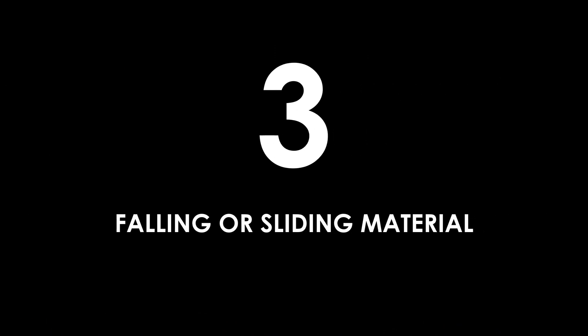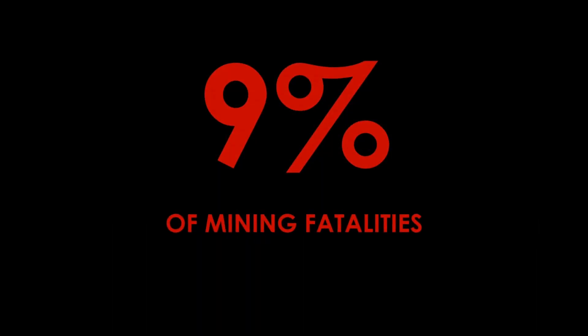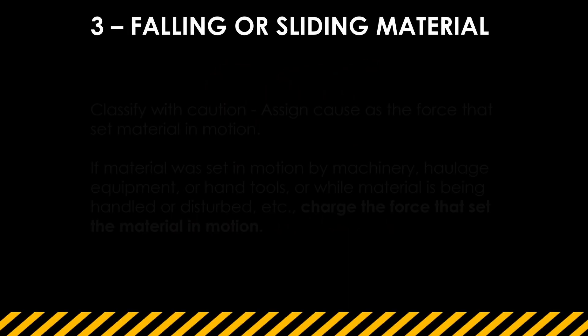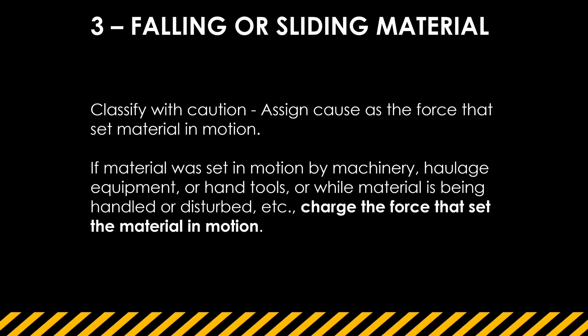Number three: falling or sliding material, making up about 9% of mining fatalities. This one can be very tricky to classify. MSHA says to classify with caution and assign the cause as the force that set the material in motion. For example, if material is set in motion by machinery, haulage, or equipment, charge the fatality to the force that set that material in motion.